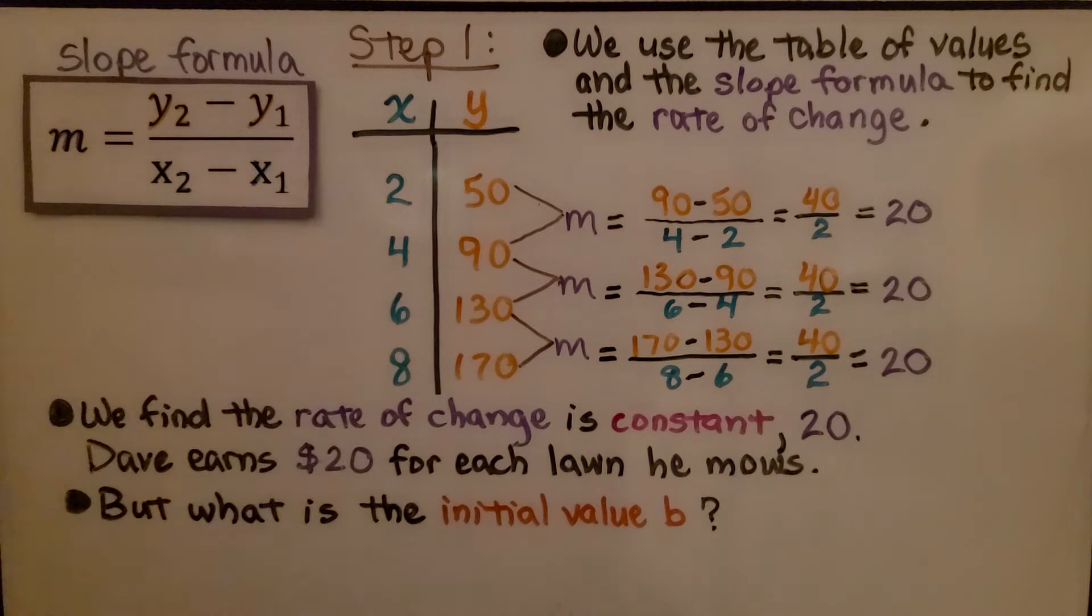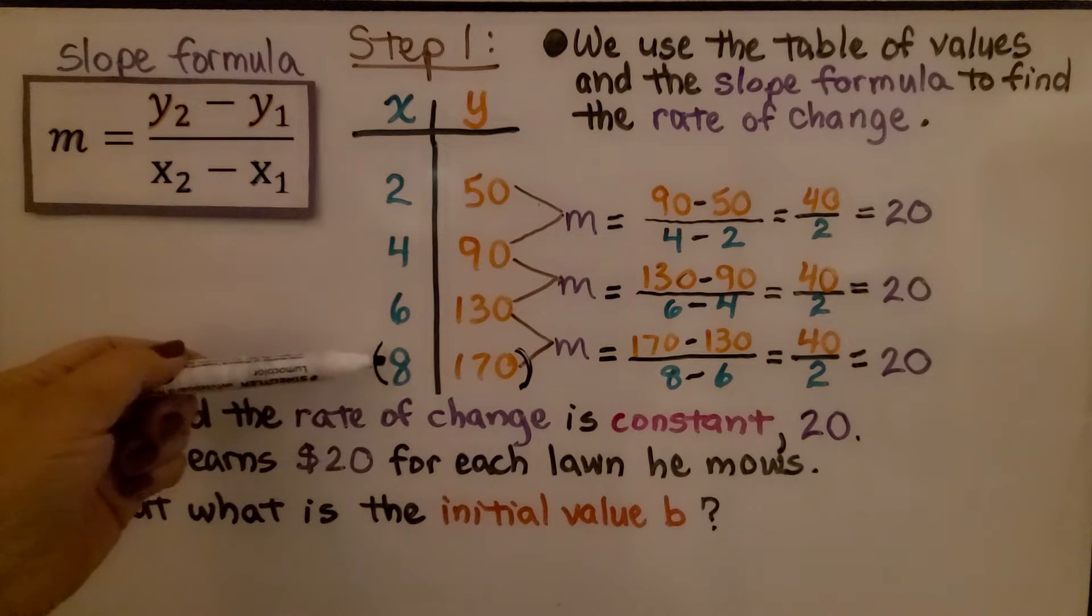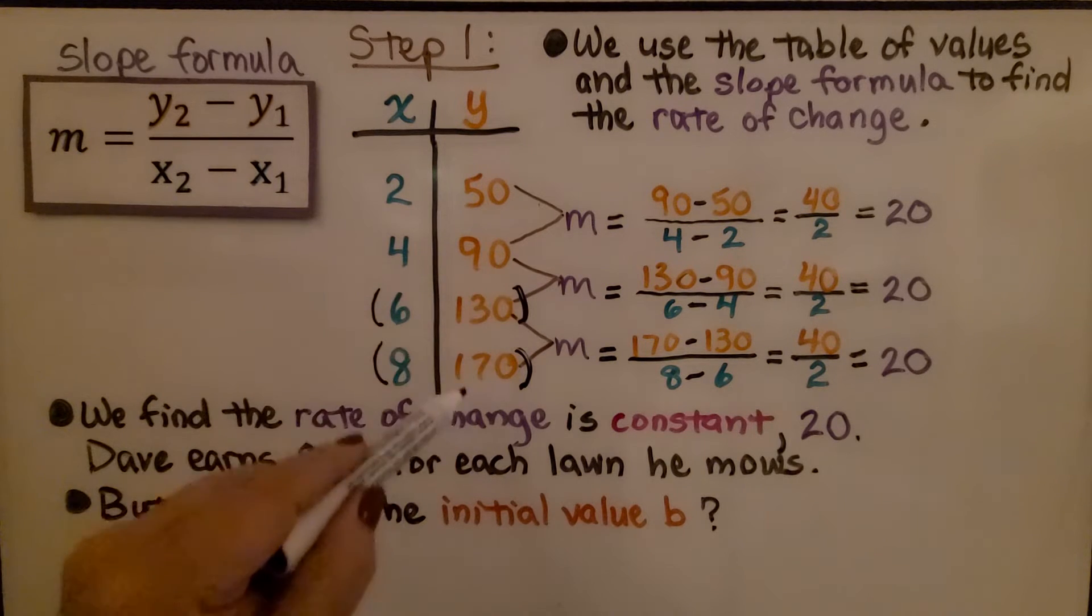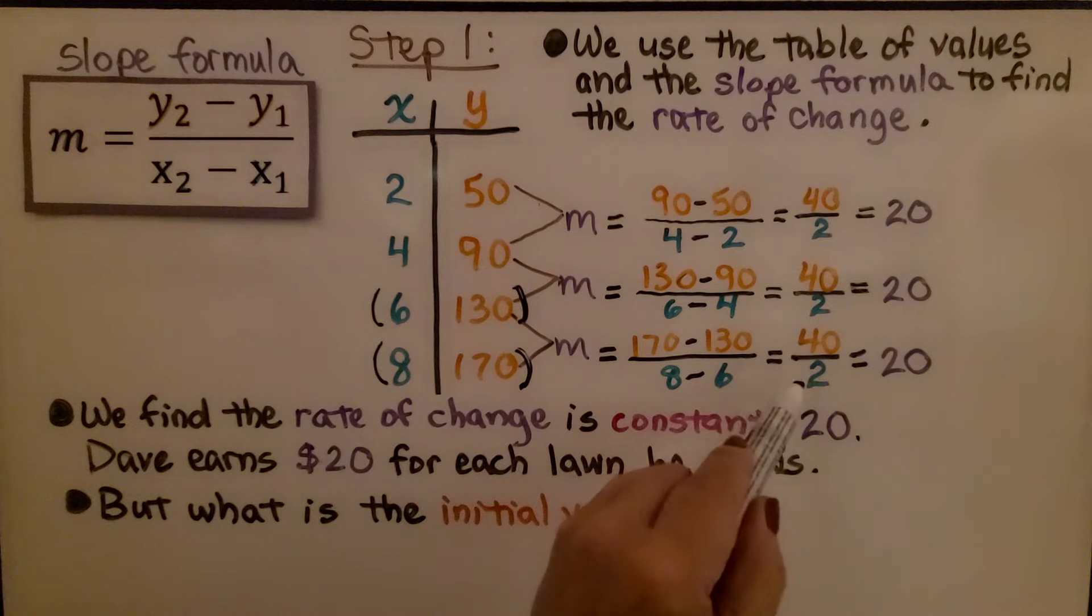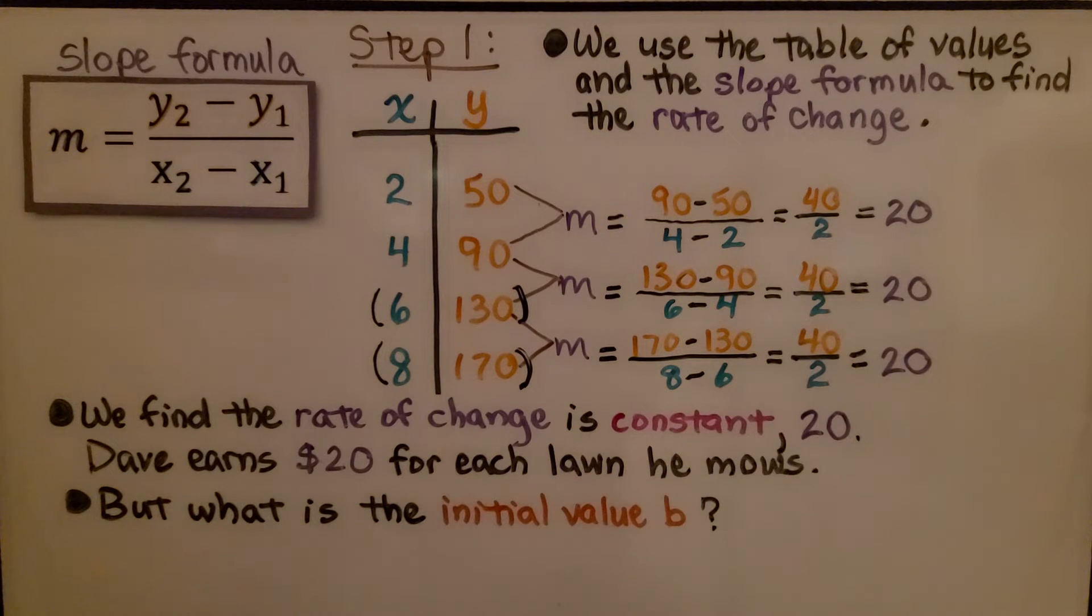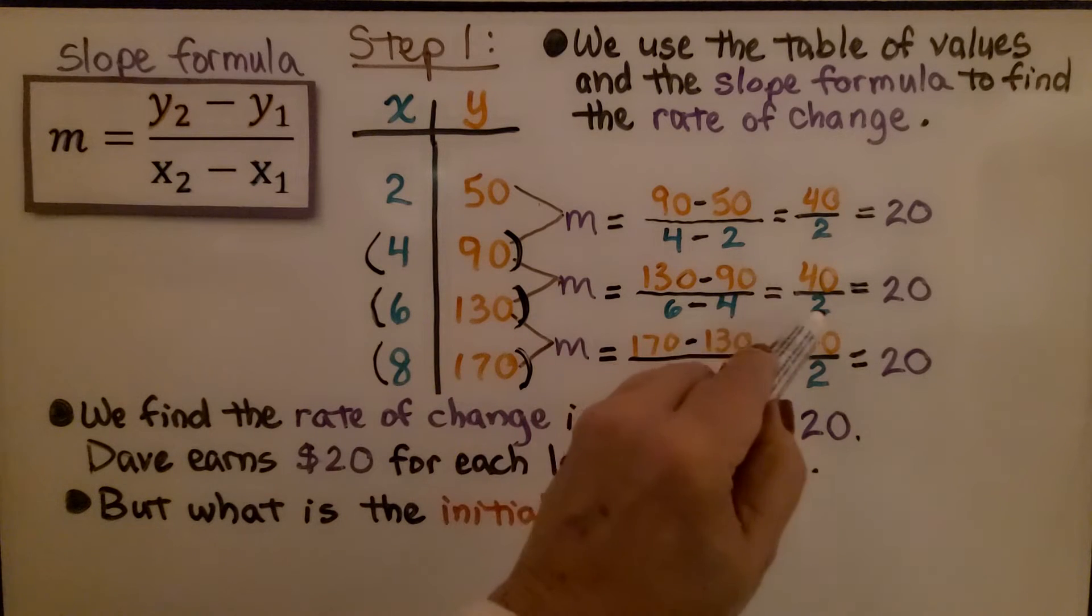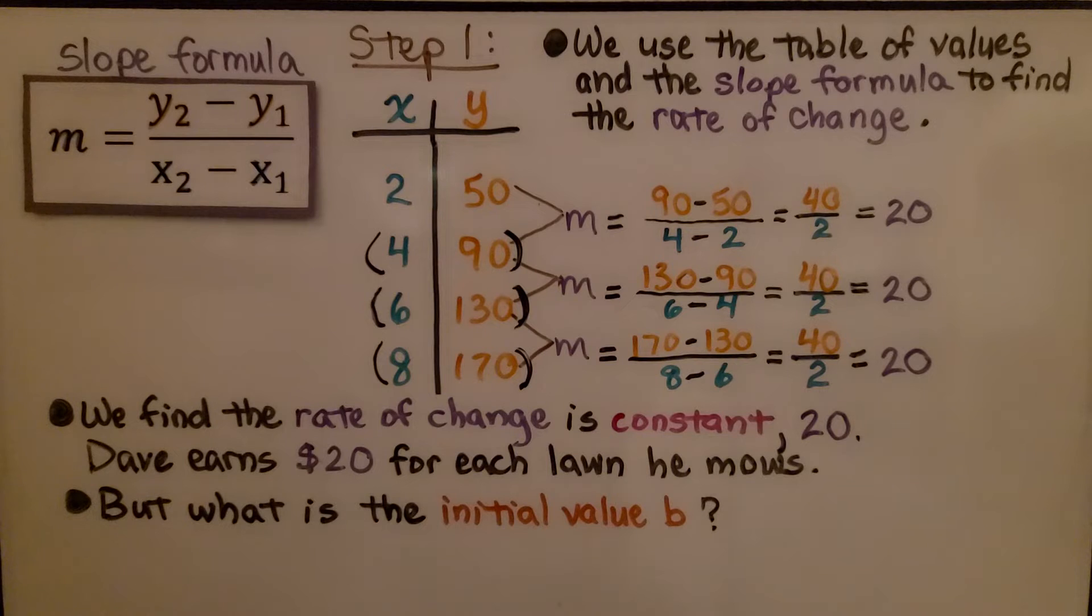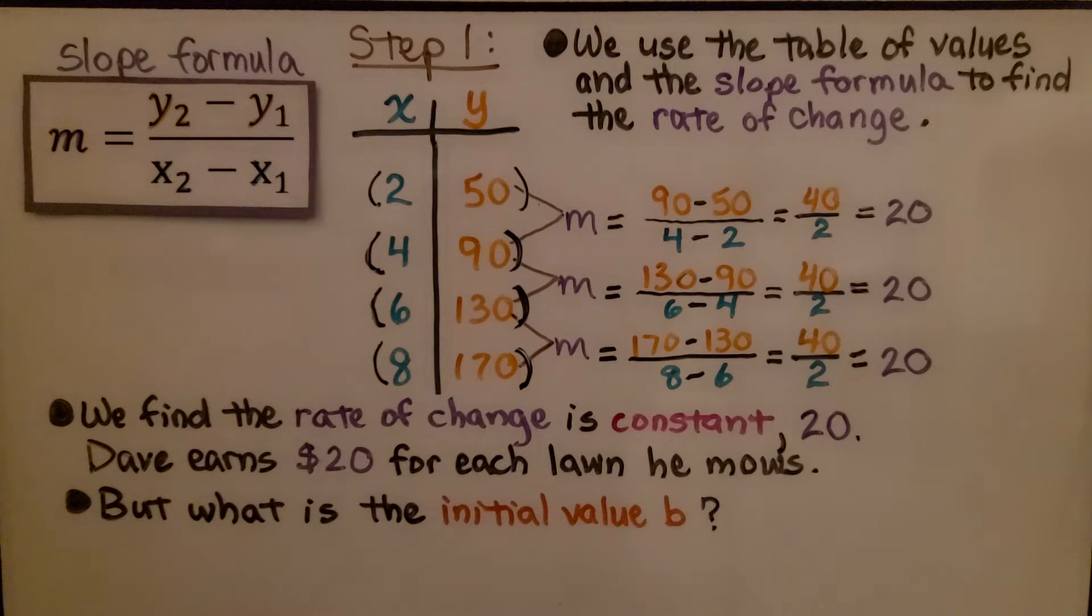It gave us these values. Using the slope formula for the second y and first y values and second x and first x values, we use these as our ordered pairs. This is our second point and this is our first point. We do 170 minus 130 and 8 minus 6, which is 40 for our rise and 2 for our run, a slope of 20. Then we do it for 6 and 130 and 4 and 90. We get 40 for our rise and 2 for our run and a 20 for our slope. And when we use 4, 90 and 2, 50, we get the same slope. We find the rate of change is constant. It's 20. Dave earns $20 for each lawn he mows. But what is the initial value b?